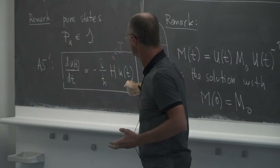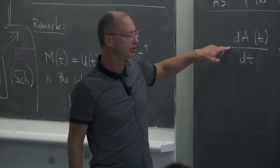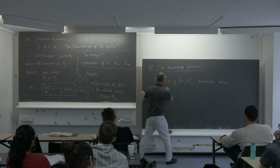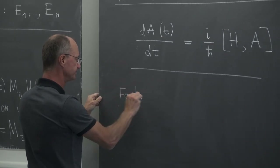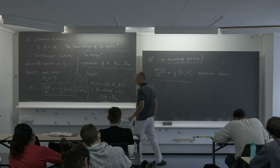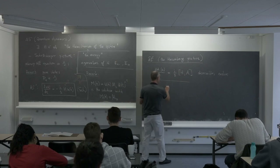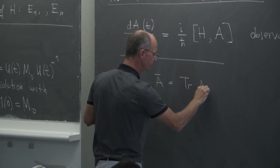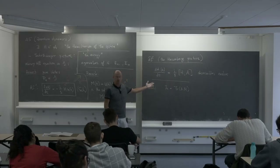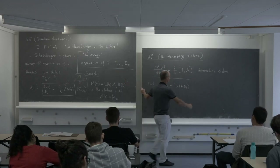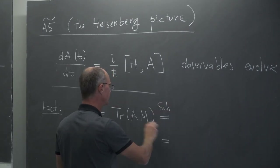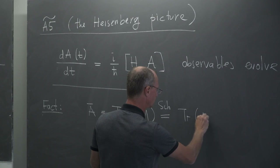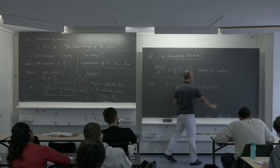A simple fact: the mean value of A, which is Tr(A·m), is something we can supposedly observe. In the Schrödinger picture, this is Tr(A₀ · m(t)) where m(t) = U(t) m₀ U(t)⁻¹. Substituting the solution, and using the cyclic property of trace, this equals Tr(U(t)⁻¹ A₀ U(t) · m₀).